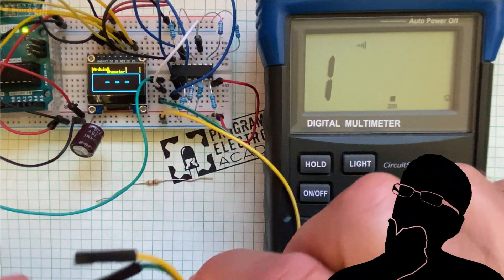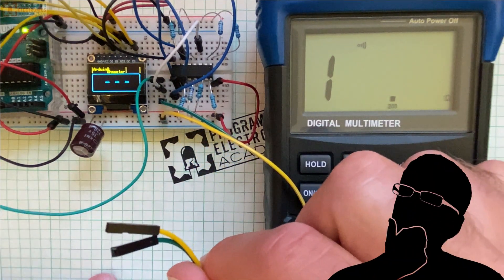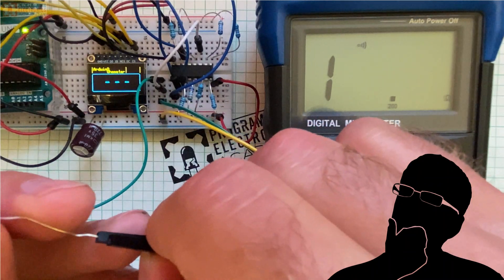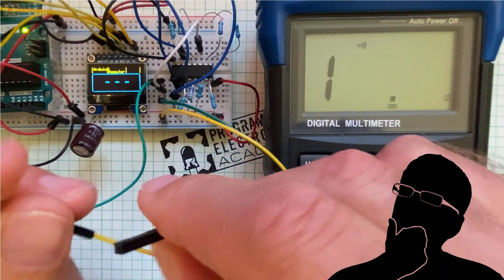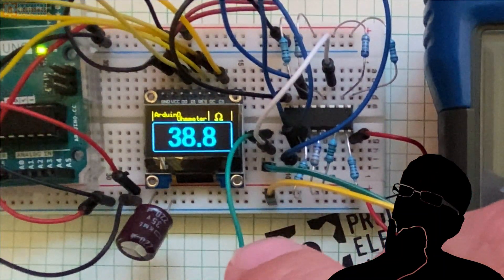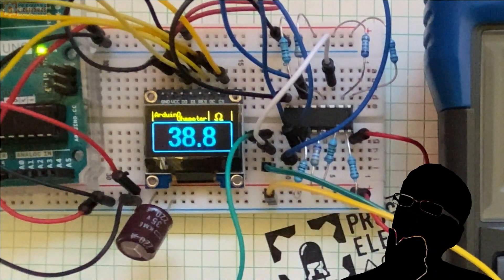Check out this auto-ranging ohm meter built and coded from scratch using an Arduino, eight precision resistors, a multiplexer, and an OLED display. It can measure resistance from zero ohms all the way up to one gigaohm with fairly high accuracy.